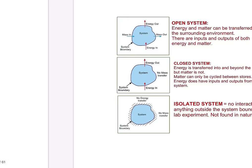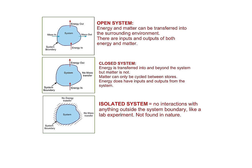Within this, you've got three types of systems. In an open system, energy and matter can be transferred into the surrounding environment — there are inputs and outputs of both energy and matter. In a closed system, energy is transferred in and out but matter is not; matter can only be cycled between the stores.